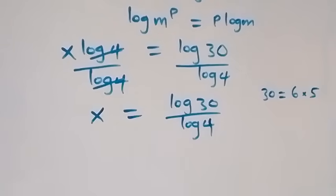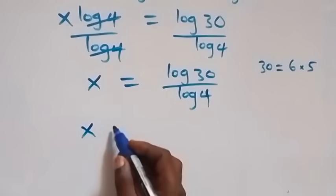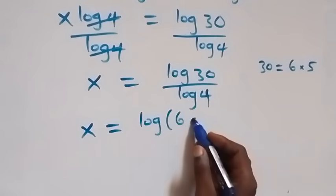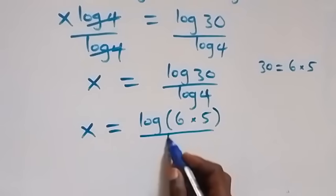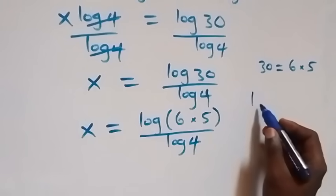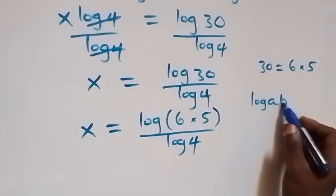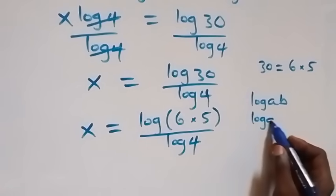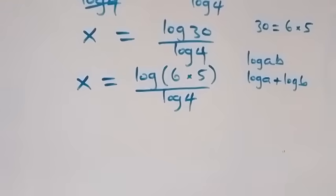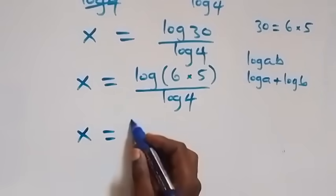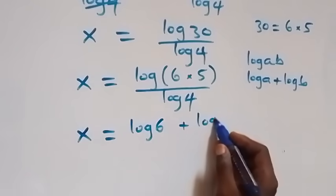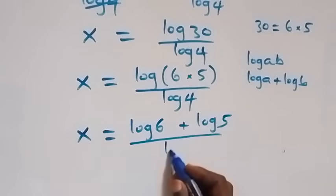So x equals log(6 times 5) over log 4. We then apply the product law of logarithms: log(a times b) equals log a plus log b. So x equals log 6 plus log 5, all over log 4.